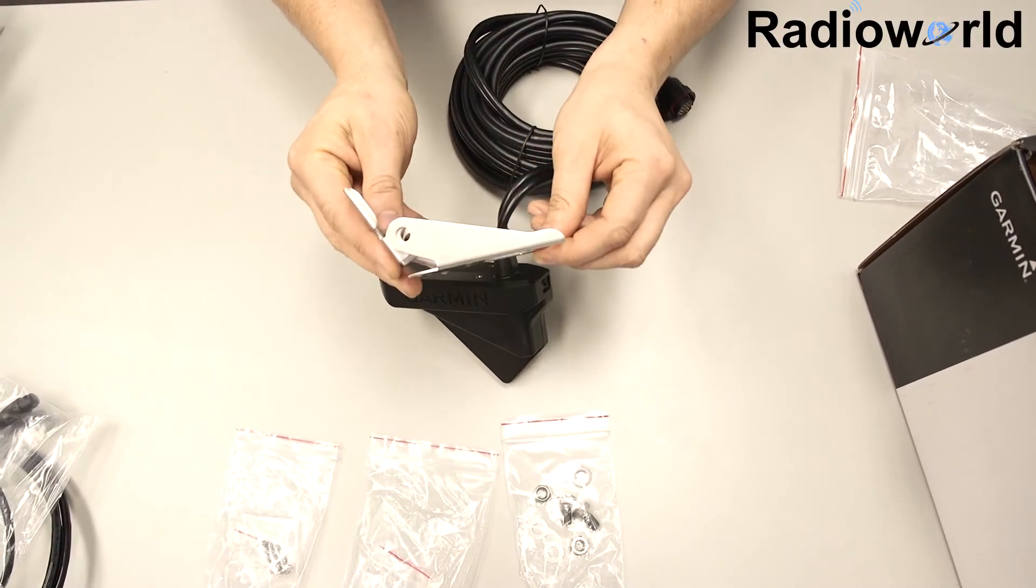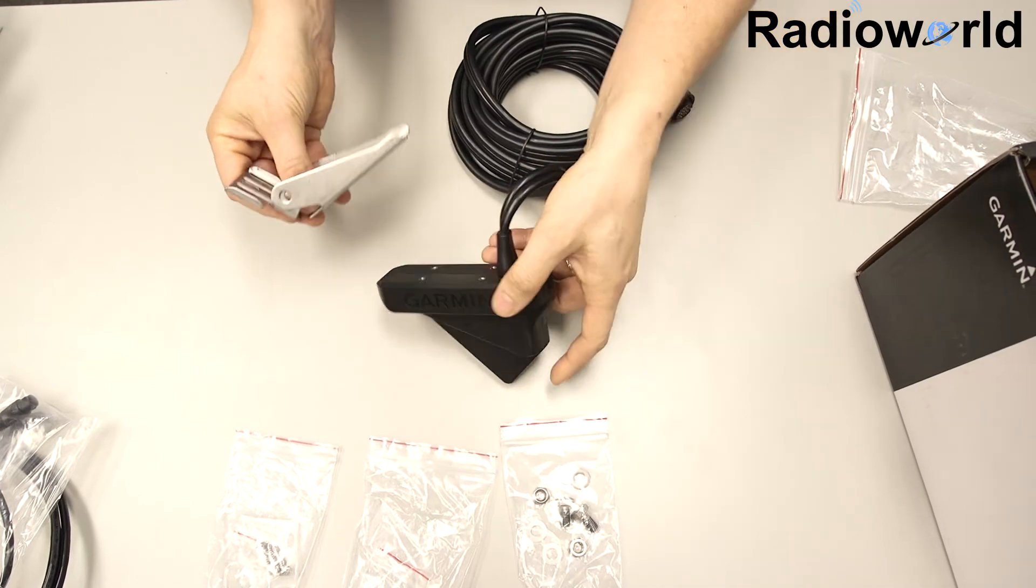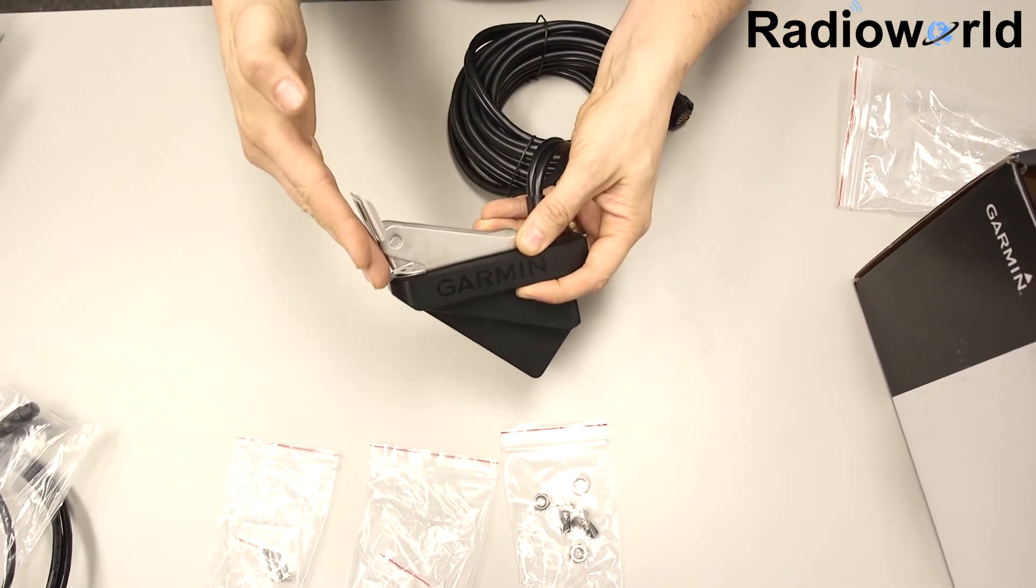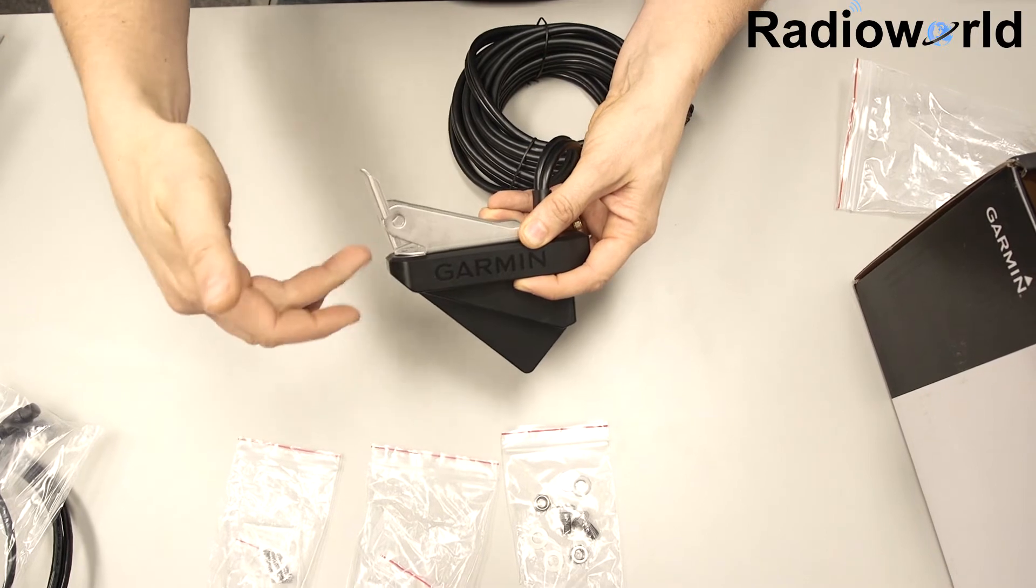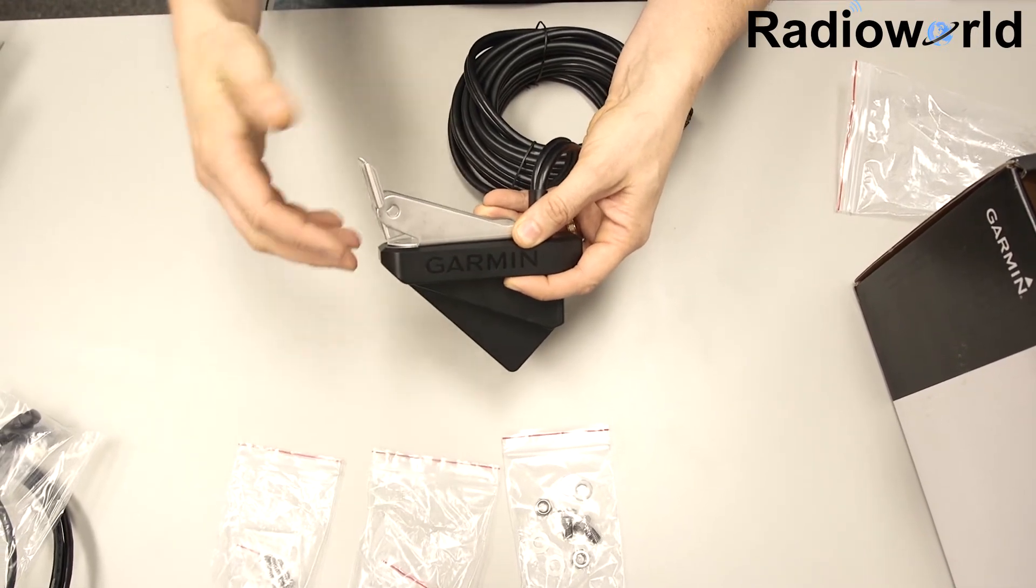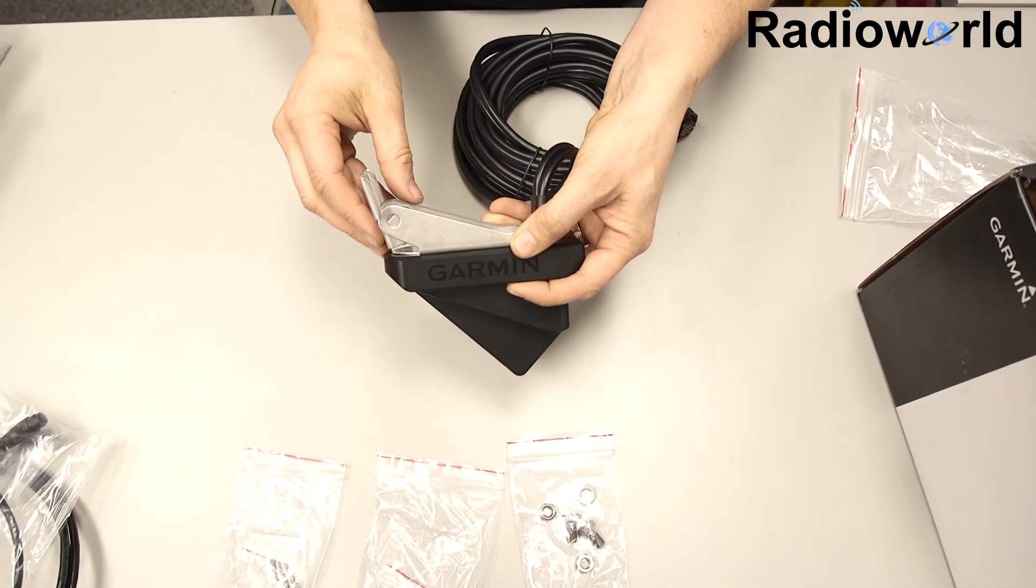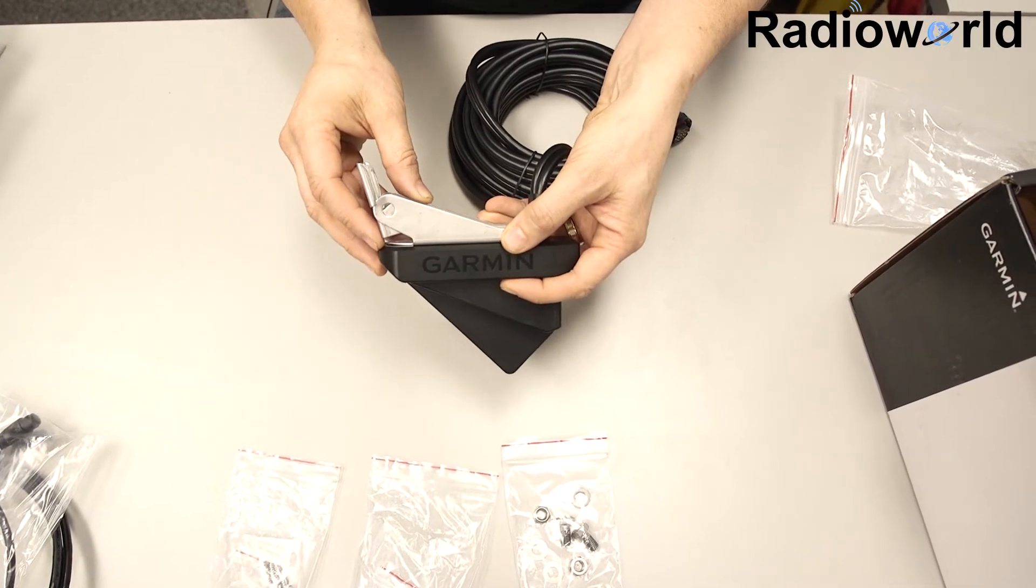So this is the transom mount that comes with it. You get all the hardware you need to go onto the Panoptix LiveScope. This would be mounted to your transom, bottom of the boat, so you do have to be aware that this much is going to be sticking down below the hull. It's definitely not something you're going to want to be putting on a planing hull at any speed.